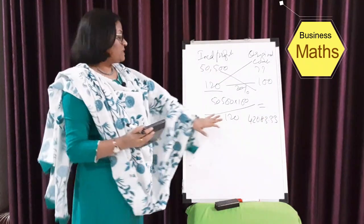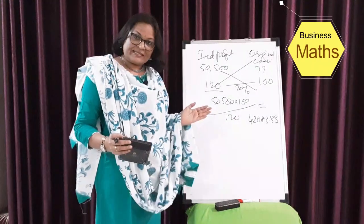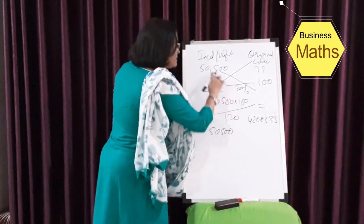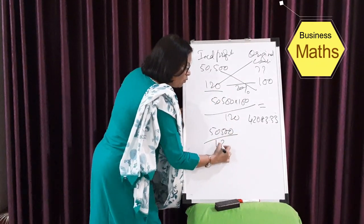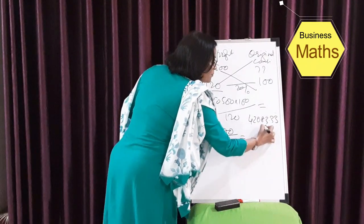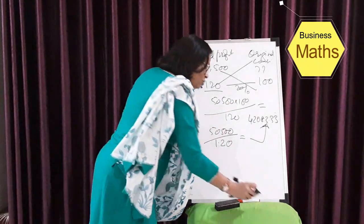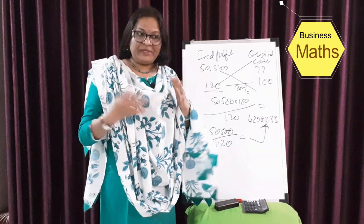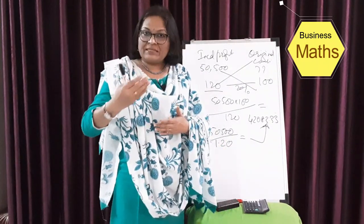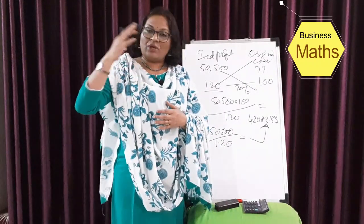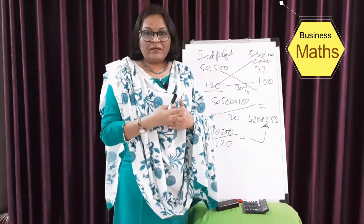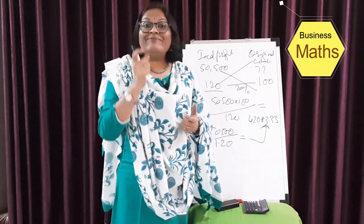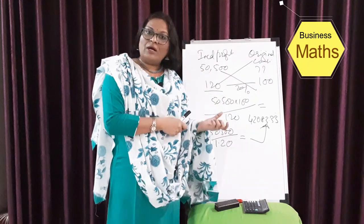That is the cost before 20% profit. Similarly, using the shortcut: 50,500 ÷ 1.20 gives you the same answer. You can use this method whenever your figure is inclusive of some percentage. For example, if a product has been marked up by 40%, and you know the marked-up cost is 140 rupees, divide 140 by 1.4 and you get the original cost of 100 rupees.